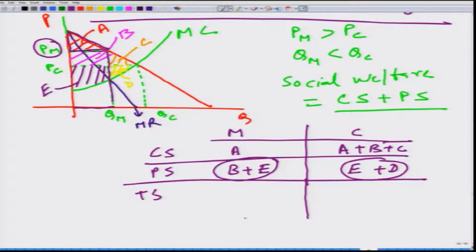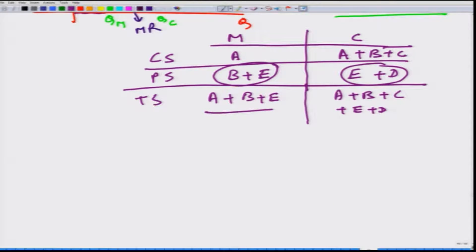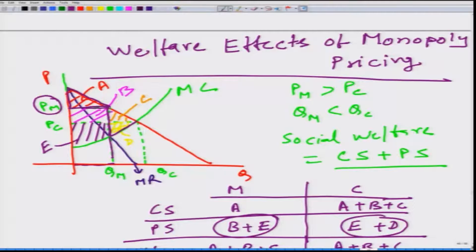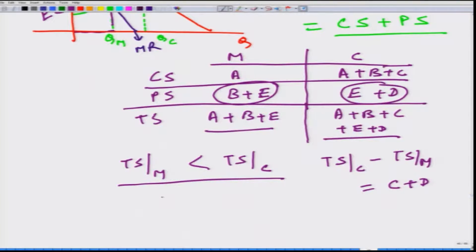What happens to total surplus? Total surplus in monopoly is A plus B plus E, while in the perfectly competitive market it is A plus B plus C plus E plus D. It is very clear that total surplus under monopoly is less than under perfect competition. The difference is TSc minus TSm equals C plus D, and in the graph this C plus D area represents the welfare loss that happens in the case of monopoly — this welfare loss is also called deadweight loss.